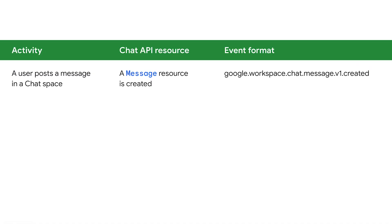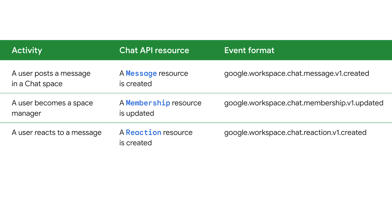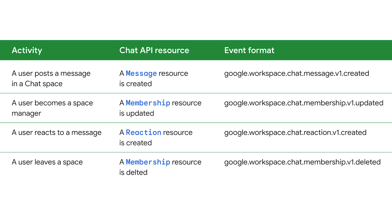As we saw before, a user posting a message in a chat space means a message resource is created and is of event type new message. When a user becomes a space manager, the membership resource is updated and Chat creates the update membership event. A user reacting to a message triggers the creation of the reaction resource and the new reaction event. When a user leaves a space, a membership resource is deleted and the event type is deleted membership.